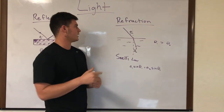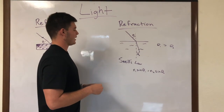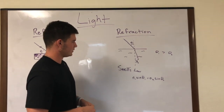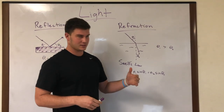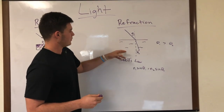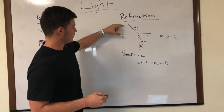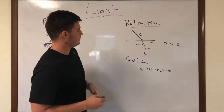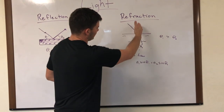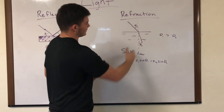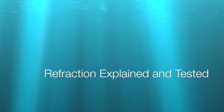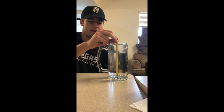Now we'll talk about refraction, which is a little bit different. We're going to look at Snell's law. Not all light is reflected — some is taken at different angles. Think of this as air and this as water. If a beam of light goes into water, it's going to get closer to the center line because of refraction and Snell's law.